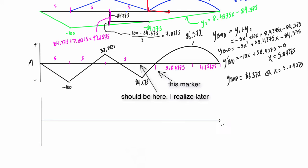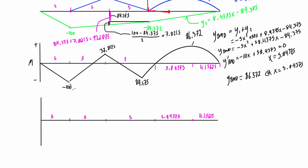We can also generate the shear force diagram from the bending moment diagram — it's a bit backwards, but we can work in reverse. Where we have a linear change in the moment diagram, that corresponds to a horizontal section on the shear force diagram. In the first region, the area (base × height) must equal negative 100, so with a base of 5, the height is −20 kN. In the next region the change in magnitude is 100 + 32.8 = 132.8125, so dividing by the base of 5 gives a height of 26.5625 kN.